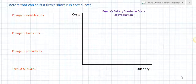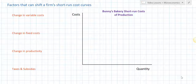In this video we're going to talk about the factors that can shift a firm's short-run costs of production. To guide us in this lesson we're going to be looking at Bunny's Bakery. First we're going to graph Bunny's short-run costs of production. There are three important cost curves that you should always consider graphing when illustrating the costs and revenues of an individual firm in a competitive market or a monopoly market — it doesn't matter. Firms of all different types face the same short-run cost of production.